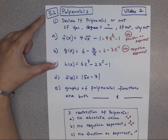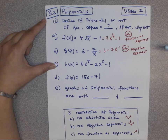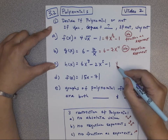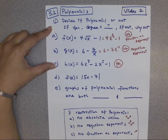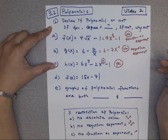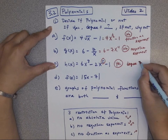The next question — it doesn't have absolute values, it doesn't have negative exponents, it doesn't have fraction exponents. So yes, this is a polynomial. We need to find the degree by looking for the highest degree, and it's degree 5.